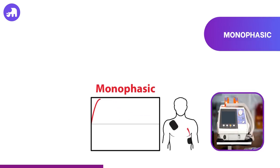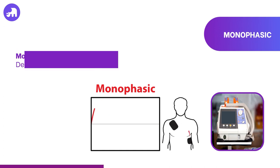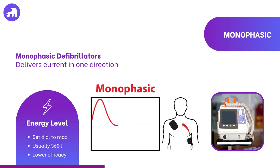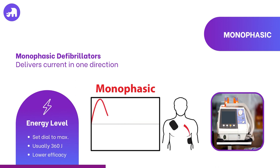Monophasic defibrillators work by delivering a single directional shock from one paddle to the other, with energy transferred in one direction across the heart. When using monophasic defibrillators on adults, they usually initiate defibrillation at a higher energy level, often between 200 to 360 joules. This higher energy requirement is due to the unidirectional nature of the shock, and subsequent shocks may necessitate increased energy if the initial shock is unsuccessful.